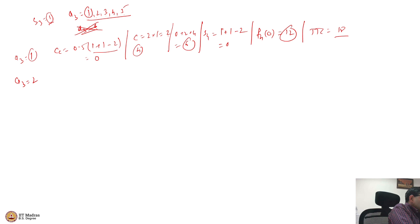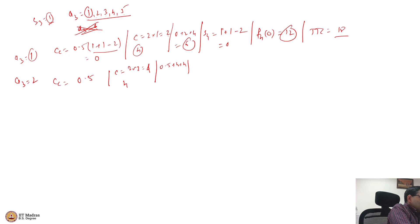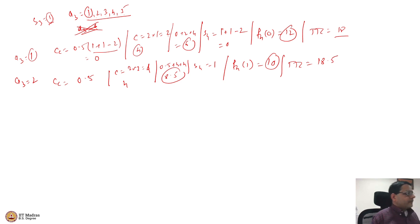With A3 = 2 and S3 = 1: carrying cost = 0.5 × (1 + 2 − 2) = 0.5. Product cost = 2 × 2 = $4. Ordering cost = $4. Total immediate cost = 0.5 + 4 + 4 = $8.5. S4 = 1, so F4(1) = $10. Total cost = 8.5 + 10 = $18.5. Similarly, A3 = 3 gives $19 and A3 = 4 gives $19.5.